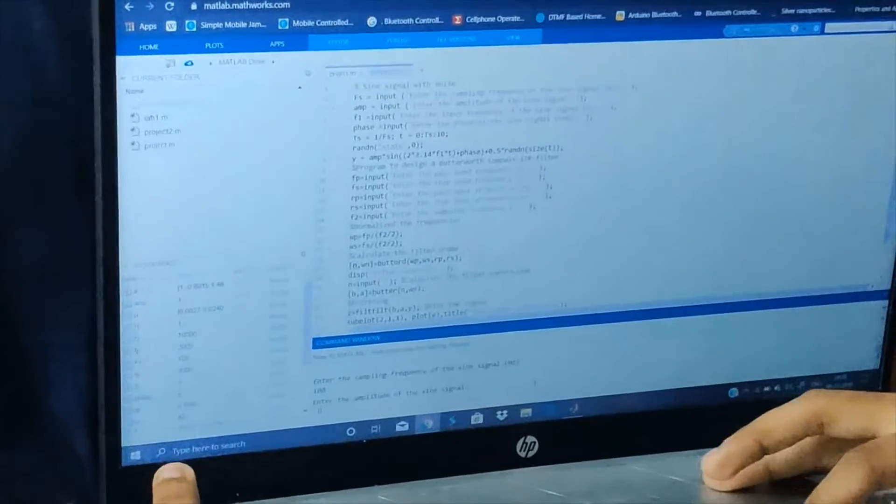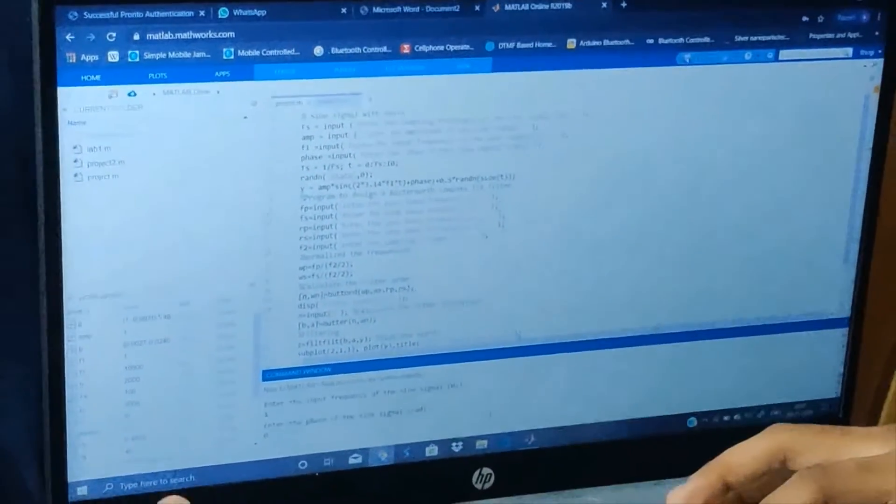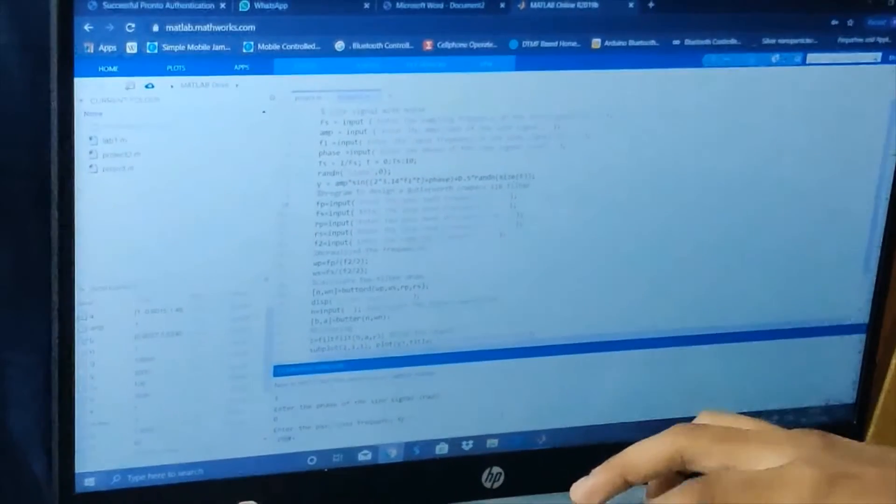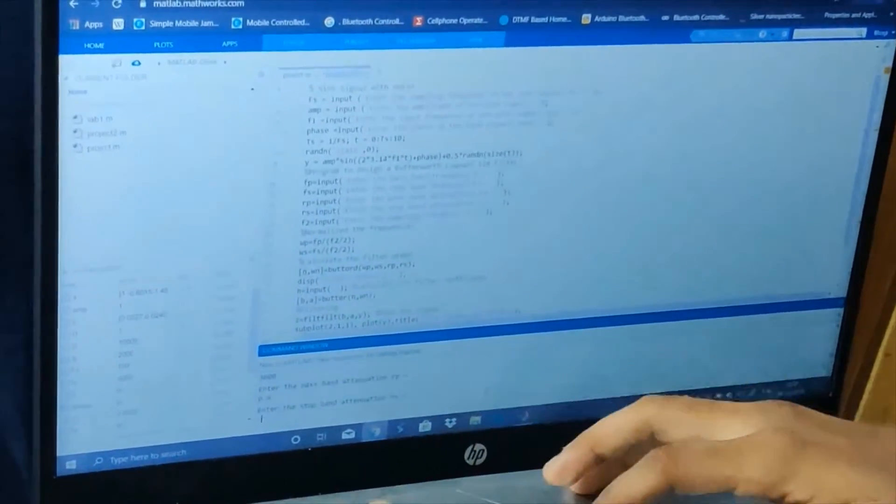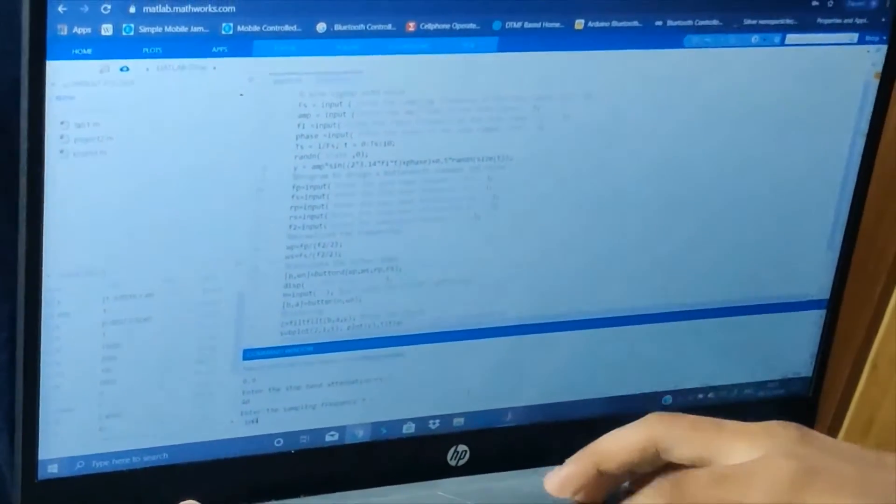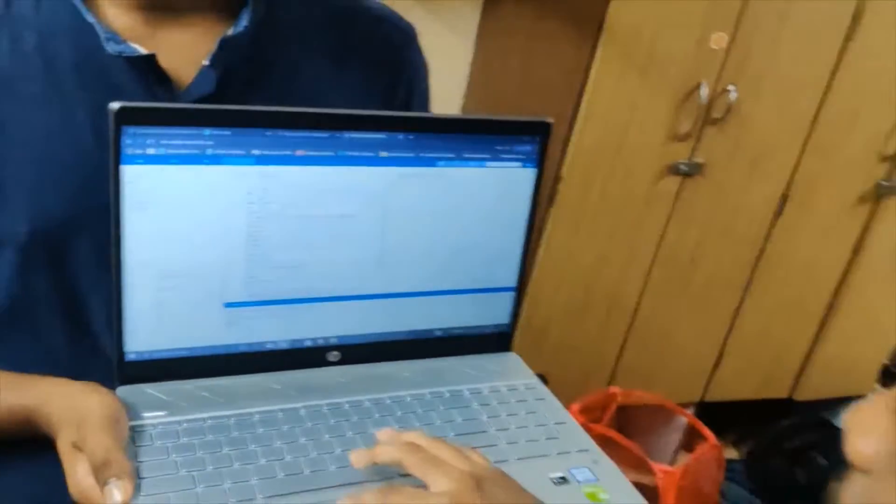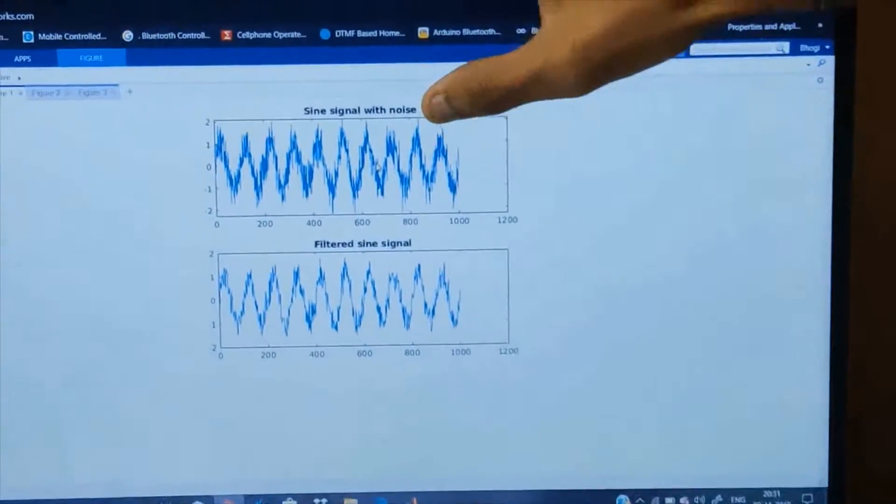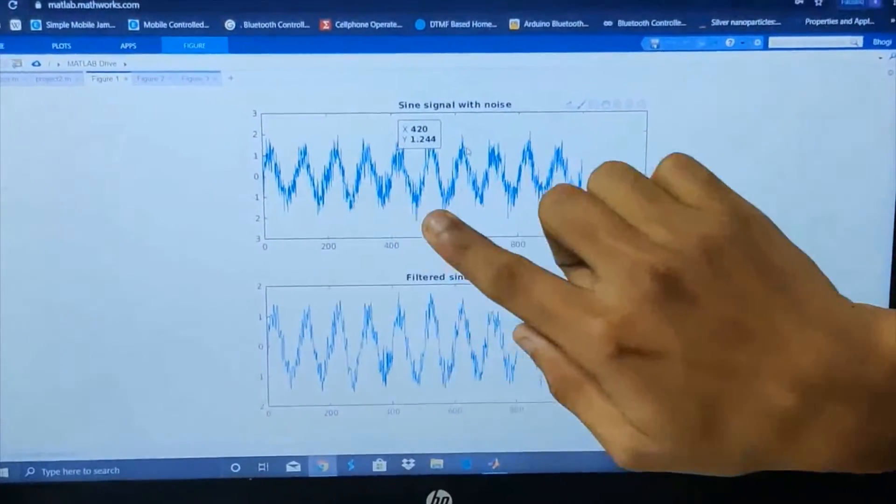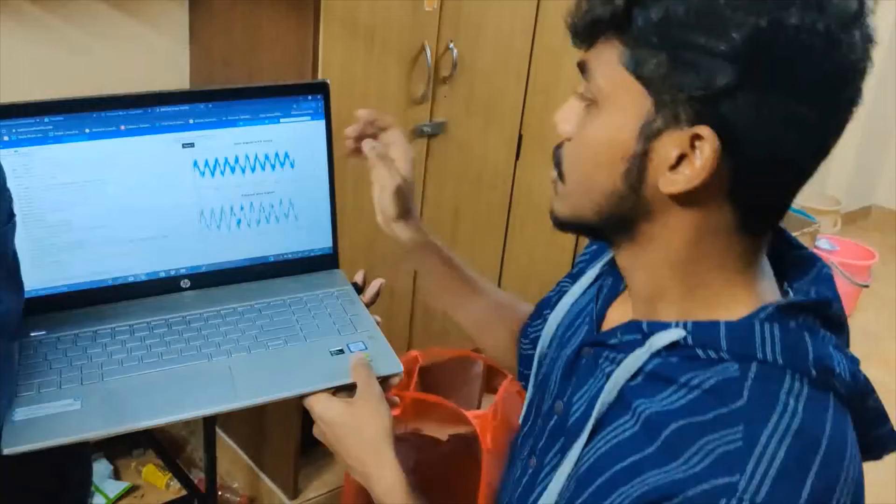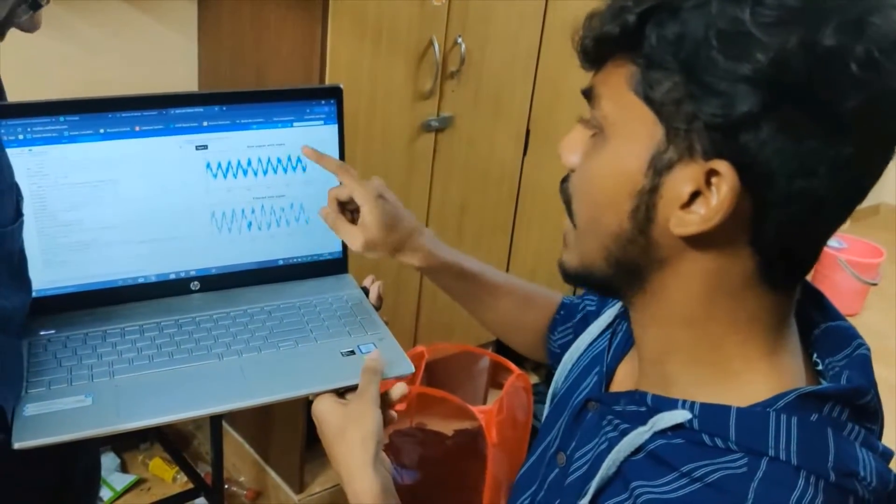Now here we are giving the inputs. Here we can see the output. We have three graphs here. One is the signal we have given, here is the sine signal with noise, and we got the filtered signal. This is the first output graph for the given values and N is equal to 9 order.